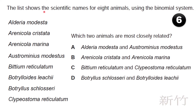The list shows scientific names for eight animals using the binomial system. Which two animals are most closely related? To find the most closely related pair, look at the genus names. Annecola artus and Annecola marina share the same genus, making them the most closely related. So the answer is B.